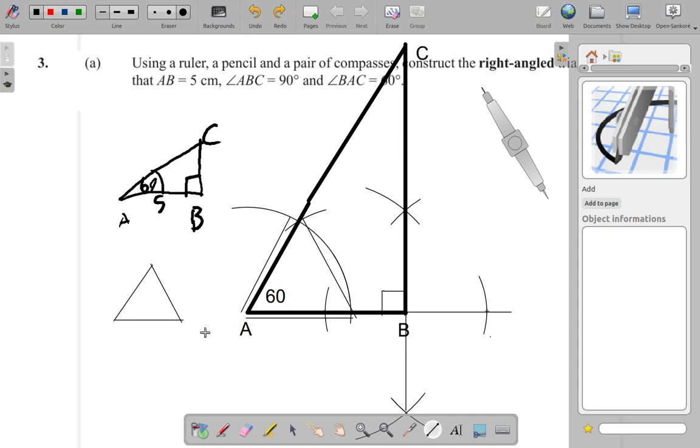So, from here to here, from here to here, the radius did not change. From this point to this point, the radius did not change. So, here to here is the same distance as here to here, same distance as here to here.